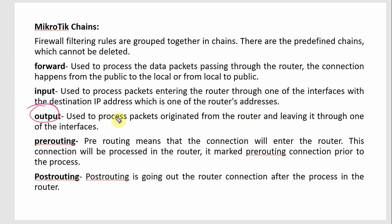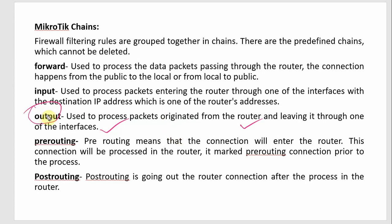The Output chain is used to process packets originated from the router and leaving through one of its interfaces. If the router itself provides a service and sends the packet out through an interface, the Output chain is selected.